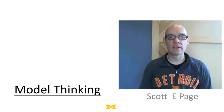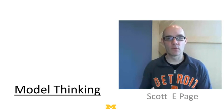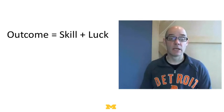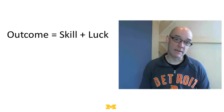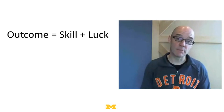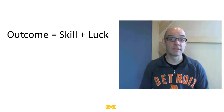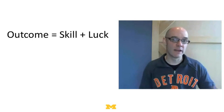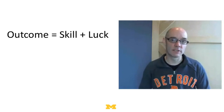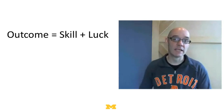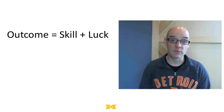In this lecture, I want to talk about the role that randomness plays in performance. In particular, I want to think about the relative role of skill and luck, and we can think of luck as randomness. A simple way to write this down is to say someone's outcome depends on two things: their skill, their ability, and also luck — did things go the right way? Did the errors fall in their direction? Did the complexity unfold in a way that was beneficial to them?